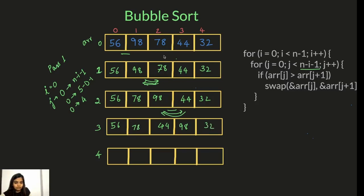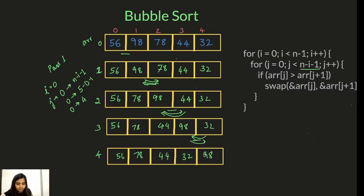Now j increments to 3, so we compare the third and fourth index. Is 98 greater than 32? Yes, so we swap it — 32 comes here and 98 goes to the end. One interesting fact: 98 is already sorted here since it's the largest element in the array. Now we know that this last part is sorted, which is why we only go till n minus i minus one.